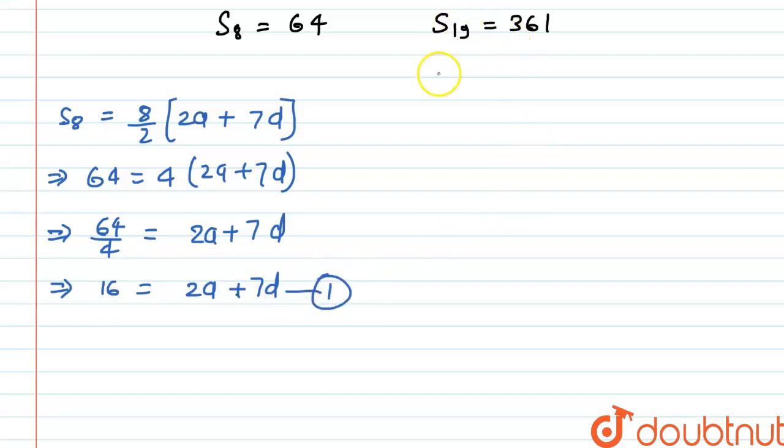Now similarly for S19, we can say that S19 is equal to 19 by 2 into 2a plus n minus 1, that will be 18D. And S19 is 361, so we can write this, that is 361 is equal to 19 by 2 into 2a plus 18D.